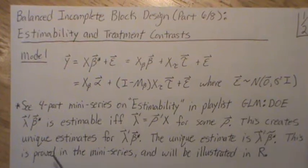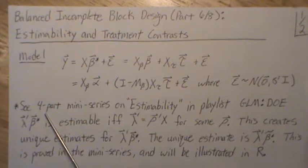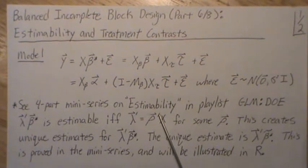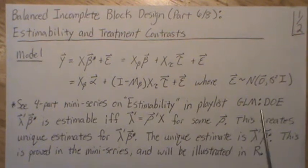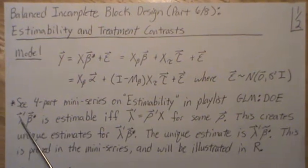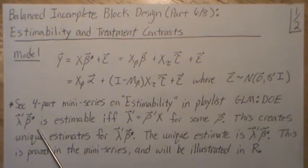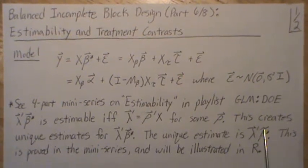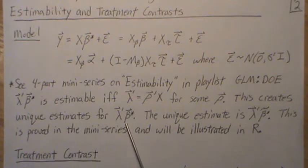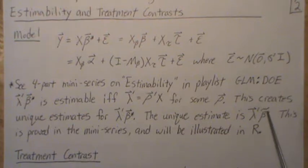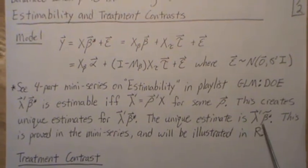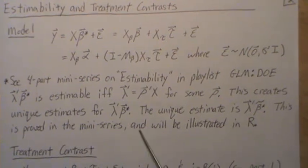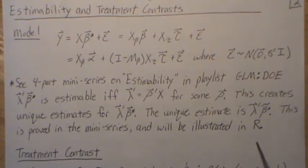I'll also refer you to a four-part mini series within this playlist on General Linear Models Design of Experiments, where we go into great detail on estimability and what it means in the context of analysis of variance. There, lambda prime beta star is estimable if lambda is part of the row space of the design matrix. This creates unique estimates for this linear combination of the beta parameters — you plug in the least squares estimate for beta and take the same linear combination.